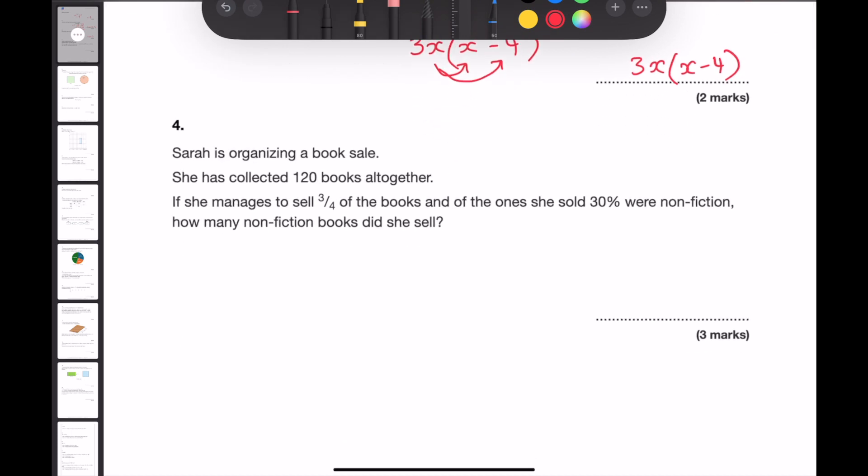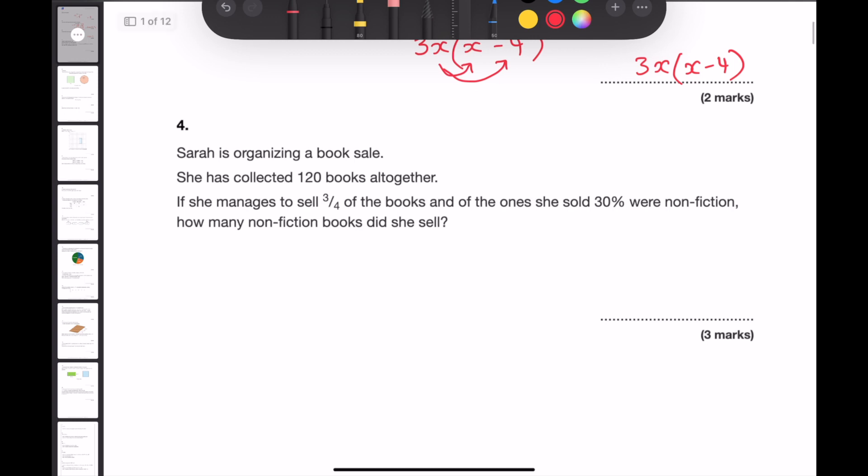Question 4. Zara is organizing a book sale. She's collected 120 books altogether. If she managed to sell 3 quarters of the books, and of the ones she sold, 30% were non-fiction, how many non-fiction books did she sell? To answer this question, we need to underline the key information. That there are 120 books, and she manages to sell 3 quarters of the books.